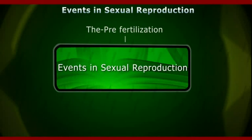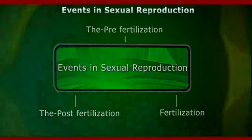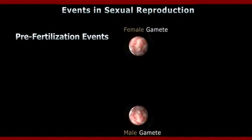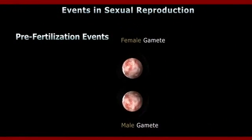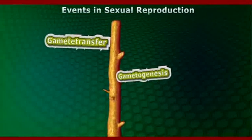Events in Sexual Reproduction. First of all, pre-fertilization; second, fertilization; third, post-fertilization events. The pre-fertilization events include all the events of sexual reproduction prior to the fusion of gametes. The two main pre-fertilization events are gametogenesis and gamete transfer.